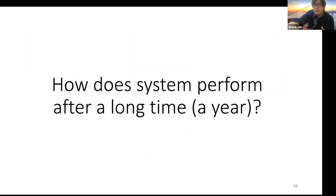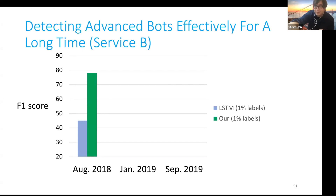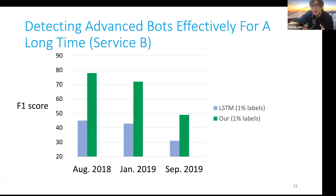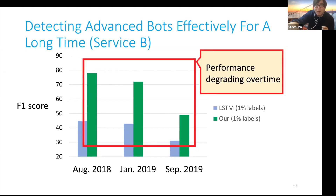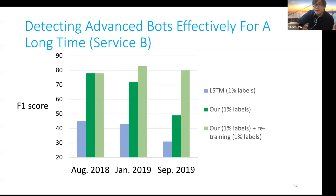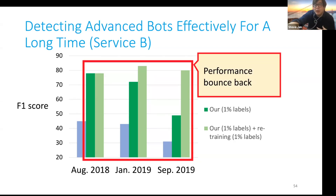Next, how do systems perform after a long time? Using service B, we train on August 2018 with 1% of labels, then test on January 2019 and September 2019. Our model is more effective than LSTM at catching bots even after a long time, though performance still degrades over time. One common method to deal with model decay is retraining. We use 1% of data from each month to retrain, and as a result performance bounces back after retraining. This suggests data synthesis is also helpful for retraining the model with limited data.